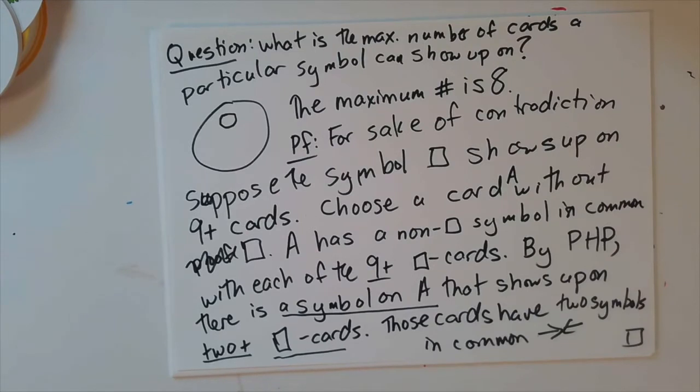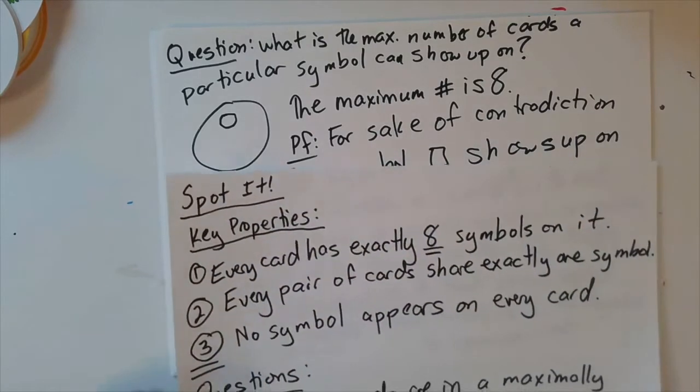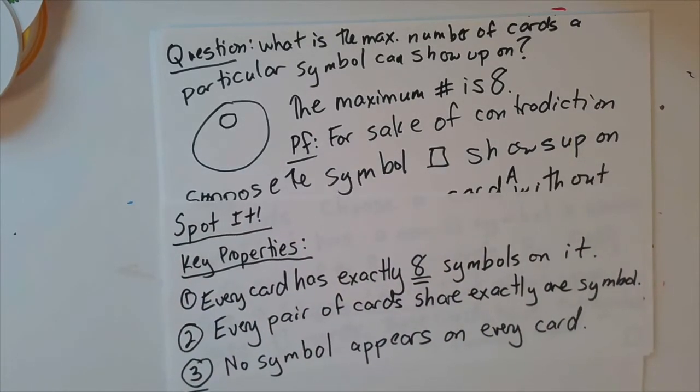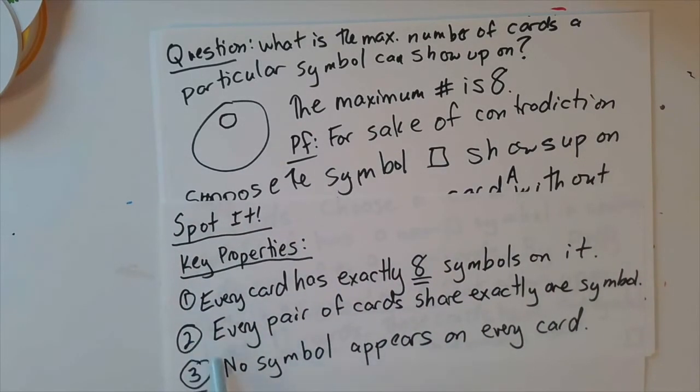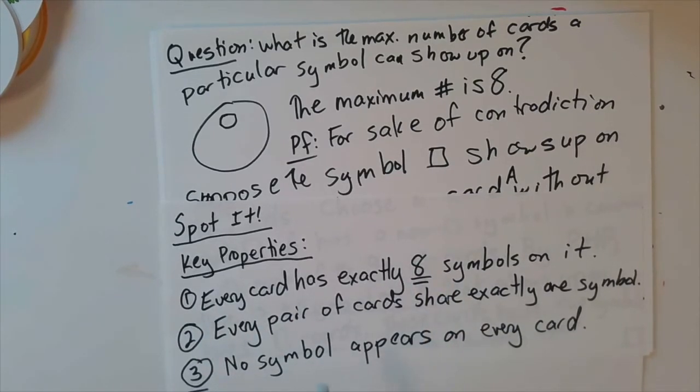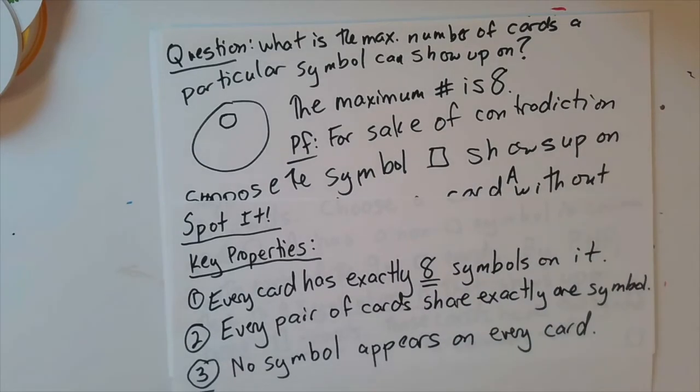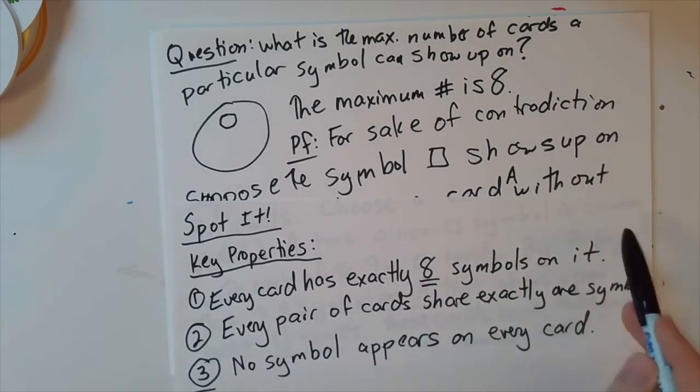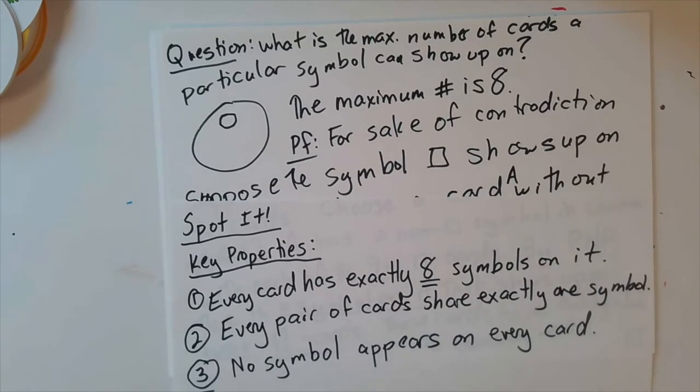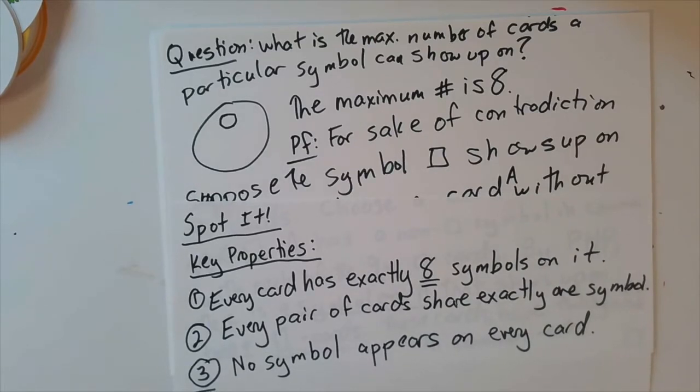Now, notice a key sign that we stumbled upon something interesting here is that in order to prove this, we've actually needed to use all three of our axioms. We needed to use that every card has exactly eight symbols. We needed to use that every pair of cards share a symbol. And we needed to use the fact that no symbol appears on every card. So that suggests we have a somewhat robust set of axioms or properties or whatever you want to call them here for our Spotted deck.